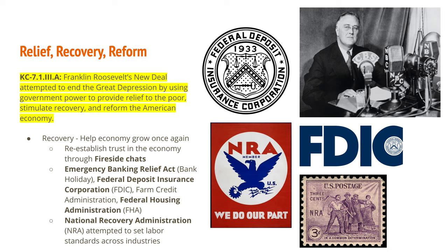Speaking of banks, the Emergency Banking Relief Act addressed the problem of bank runs becoming more common, affecting even solvent banks. The fear that banks would become insolvent was causing people to run to those banks, creating a self-fulfilling prophecy. So the Emergency Banking Relief Act created a bank holiday in the first 100 days of FDR's presidency — all banks closed until the federal government examined their balance sheets and declared it safe for them to reopen, giving depositors confidence.